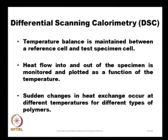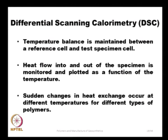Differential scanning calorimetry (DSC) uses a temperature balance between a reference cell and a test specimen cell. We measure the heat flow into or out of the specimen and plot it as a function of temperature. Sudden changes in heat exchange occur at different temperatures for different polymer types. By looking at the temperature at which heat exchange is most significant, we can identify the type of polymer.